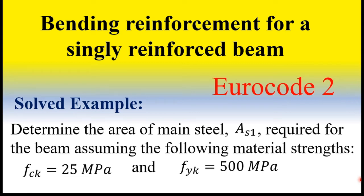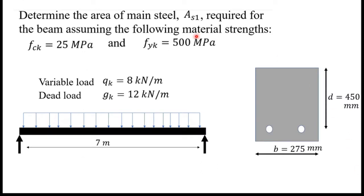In this video I'm going to show you how to determine the area of main steel of a concrete section. The problem says: determine the area of main steel required for the beam, assuming the following material strengths FCK and FYK are given, along with variable load and dead load.